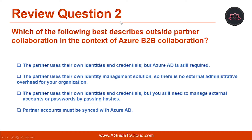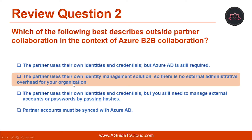Let's look at question number two. Which of the following best describes outside partner collaboration in the context of Azure B2B collaboration? The correct answer is the partner uses their own identity management solution, so there is no external administrative overhead for your organization.